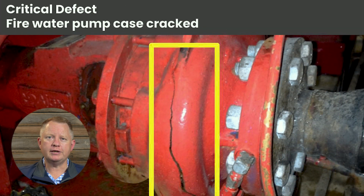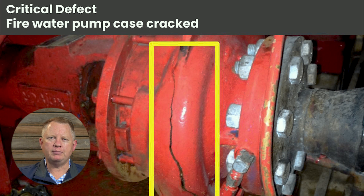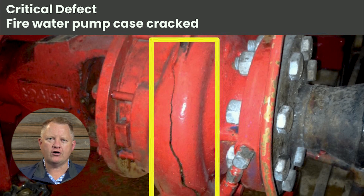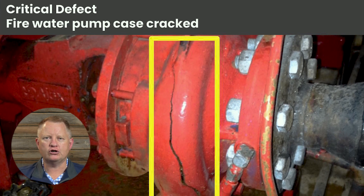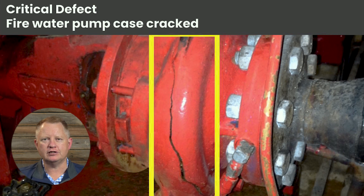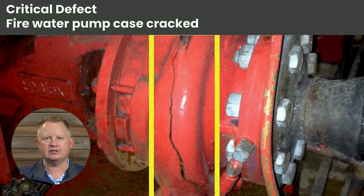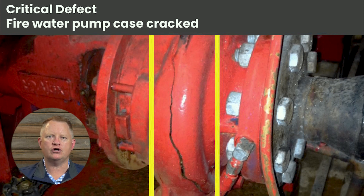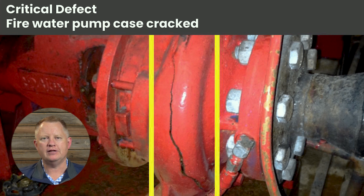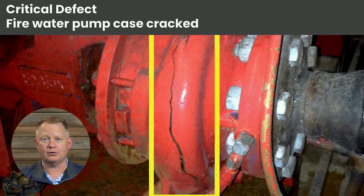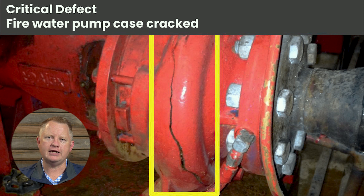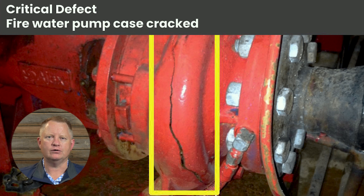This one is a bit unique. It's the housing of a fire pump that's been cracked. I would definitely call this a critical defect because it adversely affects the function of the entire system — the water supply. So that is definitely a critical defect.